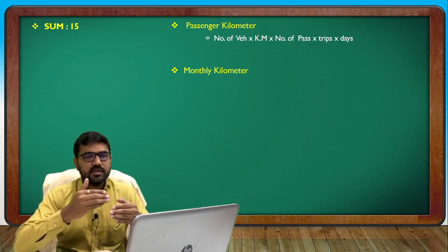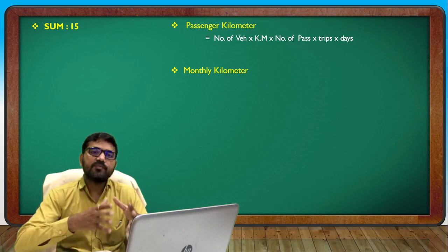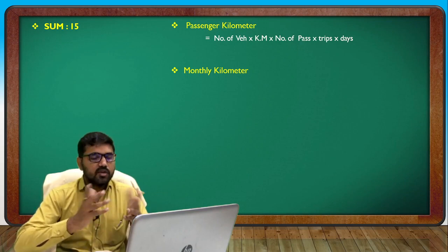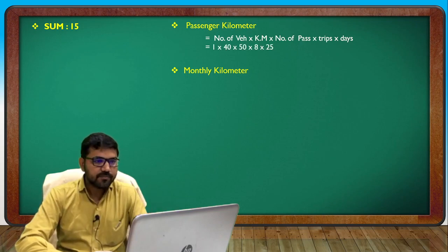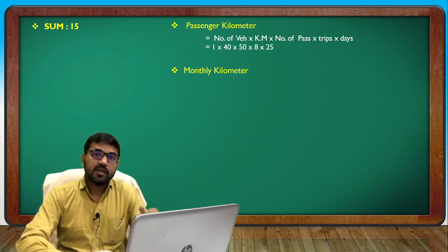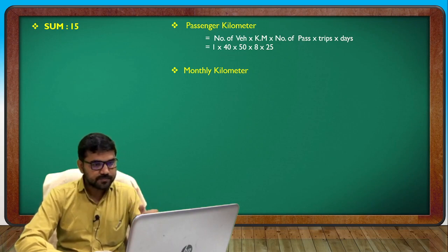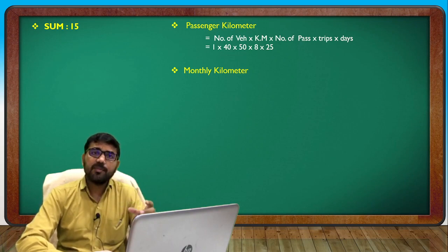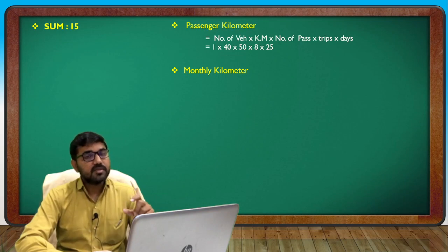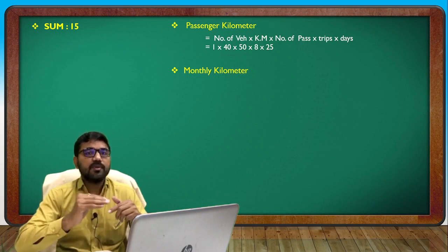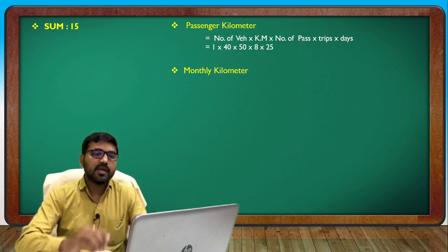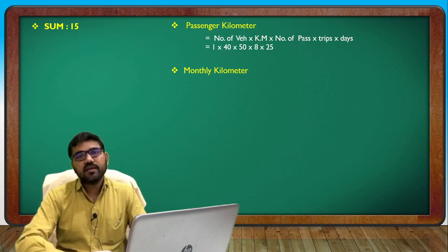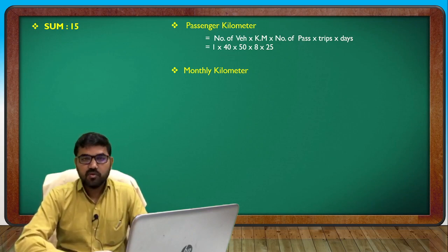The number of vehicles is 1, kilometer distance is 40, passengers on average is 50, and the bus makes 4 round trips — 4 plus 4 equals 8 — and the days run is 25.